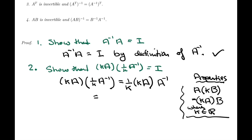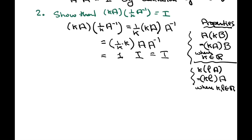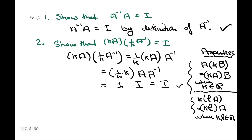The next step is to multiply 1 over k times k. Looking back at properties of multiplication by a scalar, there's a property that says k times l times A equals (kl) times A, where k and l are real numbers. So we can do 1 over k times k first, then times A times A inverse. Since 1 over k times k is 1, and A times A inverse is I by definition, we get 1 times I, which is just I — exactly what we wanted to show.